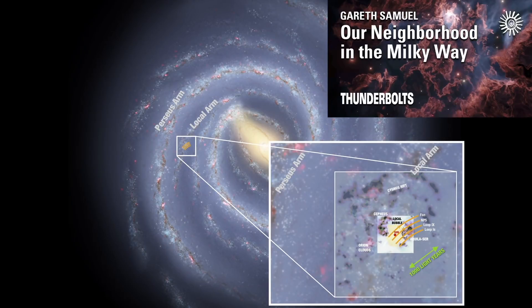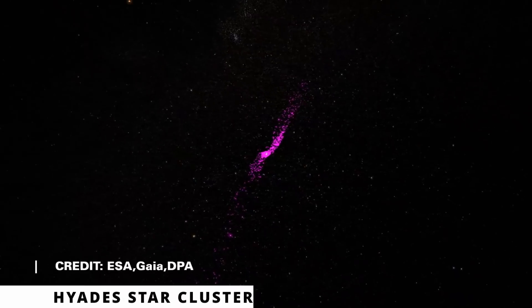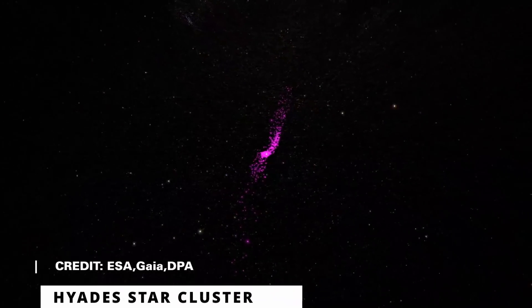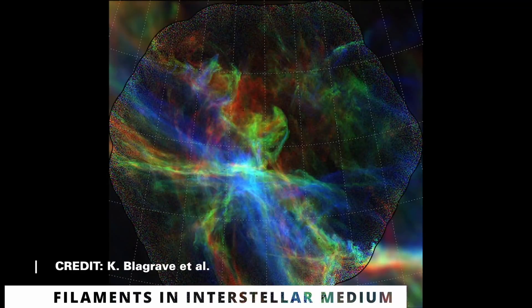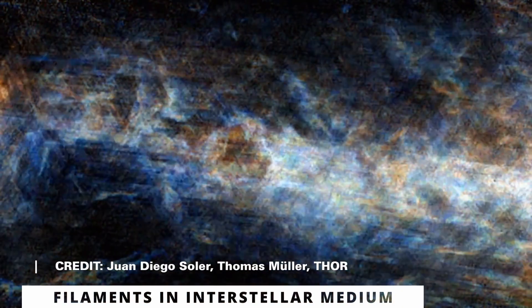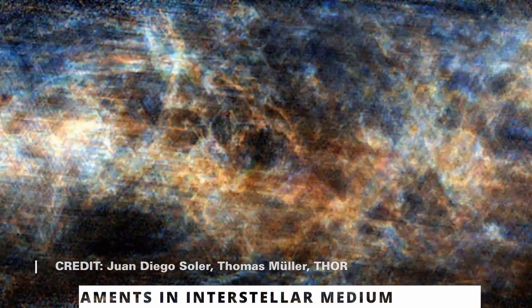We recently looked at the new discovery of filament structures located in our neighbourhood. We also saw that the nearest open star cluster to us revealed an important part of the filament structure of the galaxy's spiral arms. Mainstream science agrees that much of the interstellar medium is not simply filled with empty space. Instead, it has a hierarchical structure and facilitates the formation of filaments that are governed by the galactic potential on a large scale.